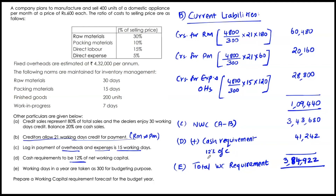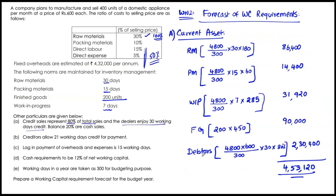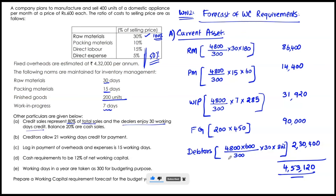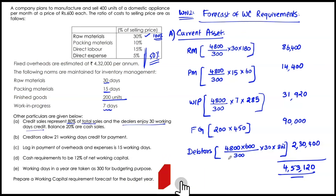To note on methodology: for work in progress valuation, raw material is taken at 100% and wages, overheads, and expenses at 50%. For debtors, we have valued them at selling price rather than cash cost. If you found this video useful, please click the like button, leave a comment, and share it for the benefit of others.